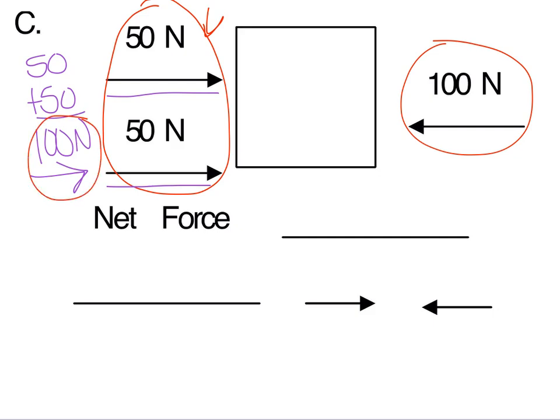But we're not done yet, because now in this example, not only do we have 100 newtons of force moving to the right on this side, we also have 100 newtons of force moving to the left on this side. So are they moving in the same direction, or are they both going different ways?